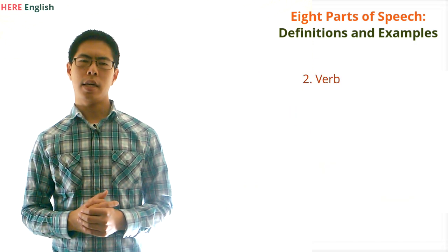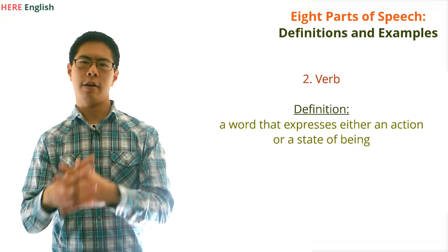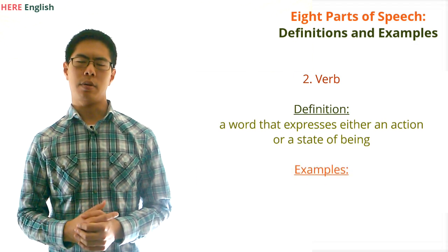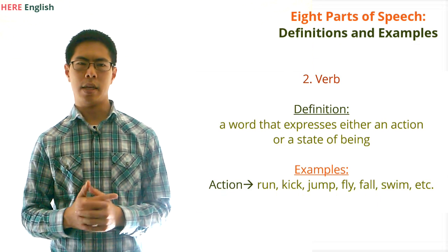Next, what is a verb? A verb is a word that expresses either an action or a state of being. Here are some examples. An action might be run, kick, jump, fly, fall, swim, etc.